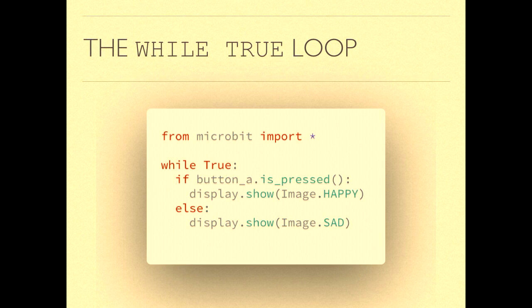I mentioned this while true loop — why do we need it? Here's a simple micro:bit Python program. All it does is when you press the A button, as long as you're holding it down, it shows a happy face on the micro:bit. If you let go, it shows a sad face. It likes attention. In a normal Python program, things run top to bottom, and that's true here too.